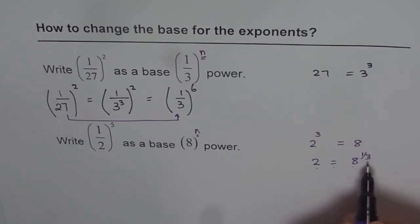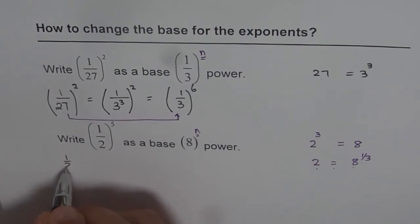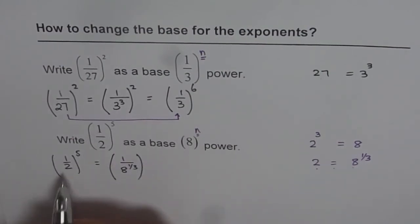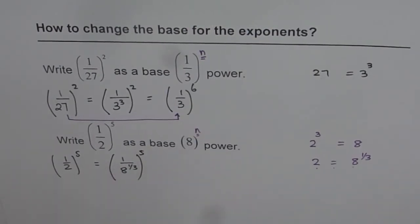2 equals to 8 to the power of 1 over 3 and then replace half with something which has 8 at its base, right? So we can say 1 over 2 to the power of 5 should be equals to 1 over 8 to the power of 1 over 3, right? Since 2 is 8 to the power of 1 over 3 to the power of 5.